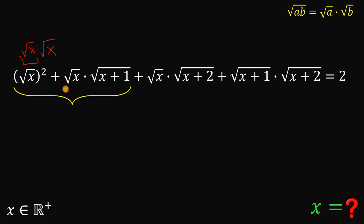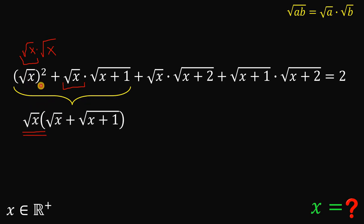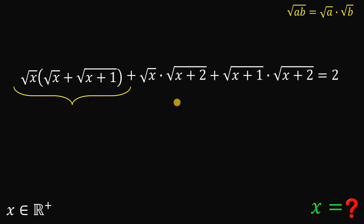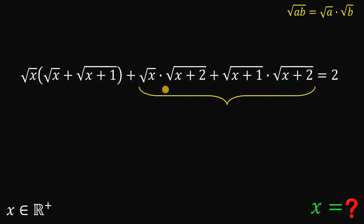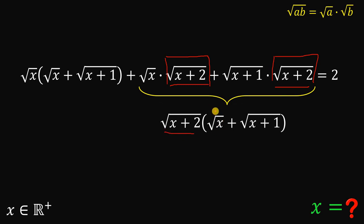Now take note that we have a common term of square root of x, so we can factor out square root of x. If we do that, we get square root of x multiplied by square root of x plus square root of (x plus 1). How about these two terms? The common factor is square root of (x plus 2), so we can factor out square root of (x plus 2). If we do that, we get square root of (x plus 2) multiplied by the quantity square root of x plus square root of (x plus 1).